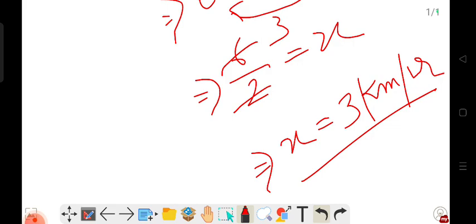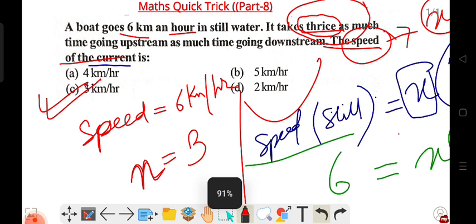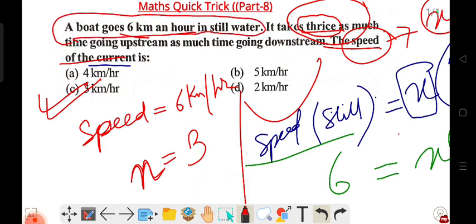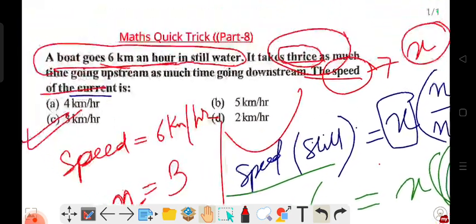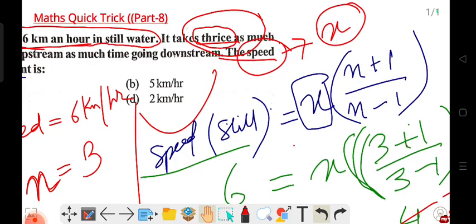So x equals 3 kilometers per hour. The current speed is 3 kilometers per hour. Option C is the answer. The formula for still water speed is x times (n+1)/(n-1).